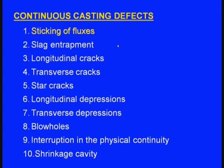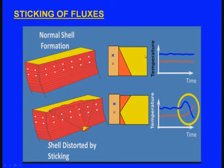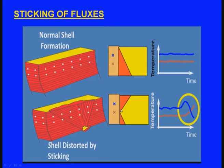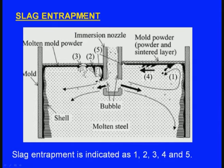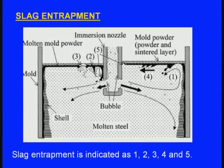First, sticking of the fluxes: here is the mold and the molten metal. As the metal goes down, the red indicates the solidified portion. In normal shell formation there is no sticking, but when the shell sticks to the mold, it becomes distorted and there is damage to the shell — this is due to sticking of the fluxes. Next, slag entrapment: the slag is entrapped at multiple locations, causing discontinuities in the cast billet, meaning slag was not properly removed from the molten metal.